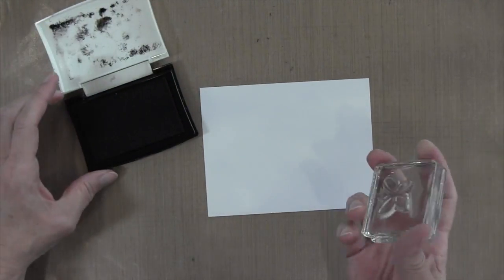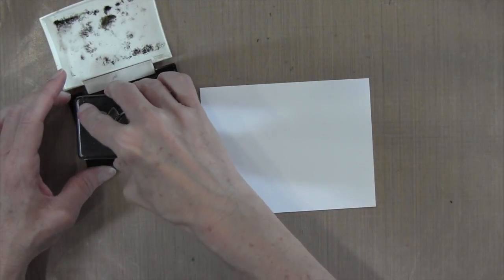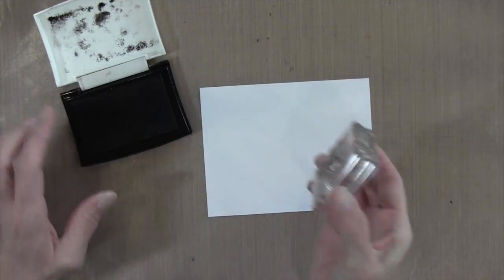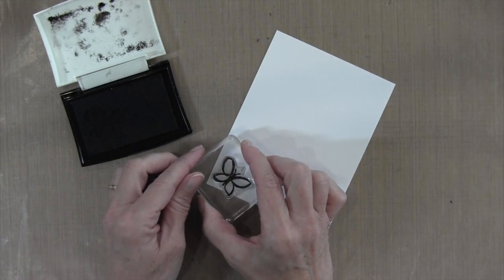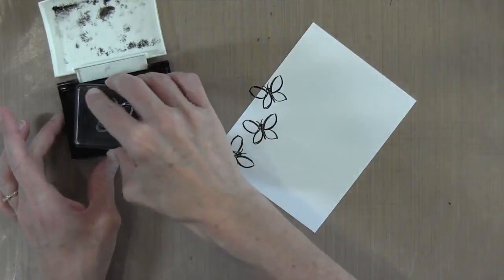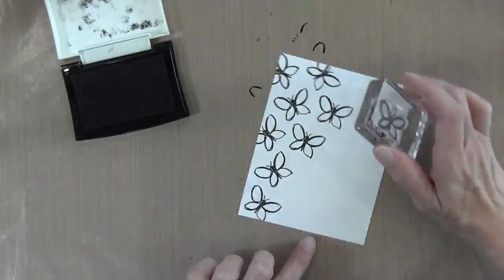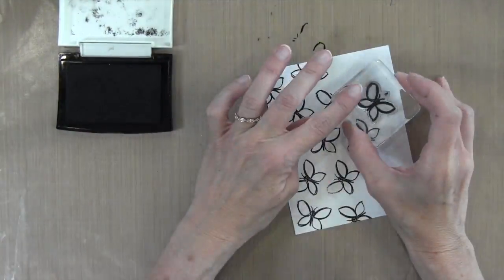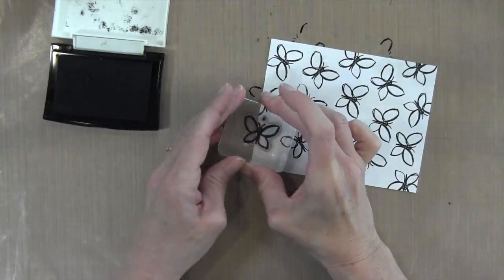This is Canson mixed media 98 pound. It's a pretty thin paper, but I like it when I'm matting layers because it doesn't get too bulky. When it is warped, it's easy to straighten out because it's so thin. I'm going to stamp all these butterflies in random directions. This is 4 and a quarter by 5 and a half inches.